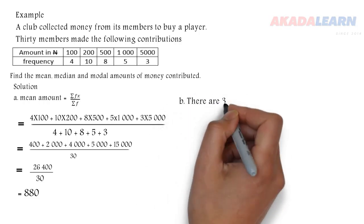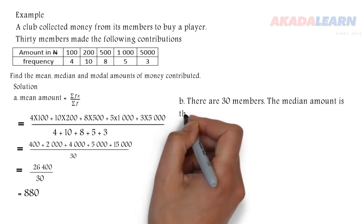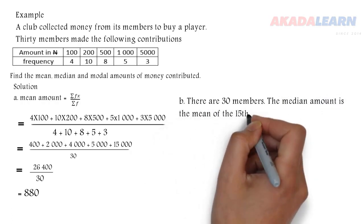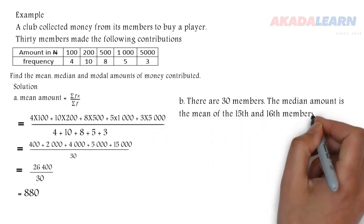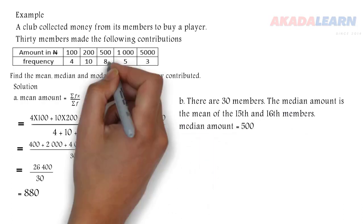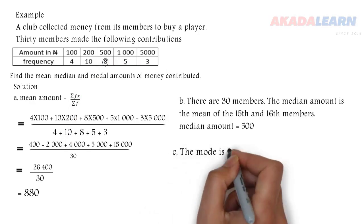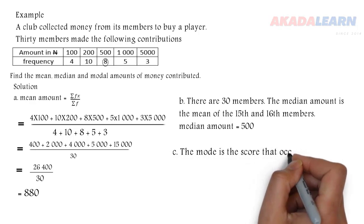Now there are 30 members as we are told in the question. So the median amount is going to be the mean of the 15th and 16th members, since 30 is an even number. The 15th and 16th both fall under 500. So we say 500 plus 500 divided by 2, which gives us 500.